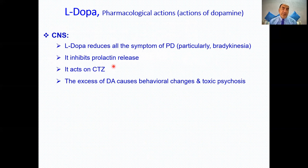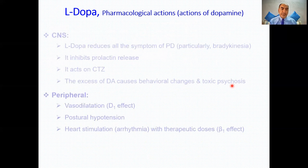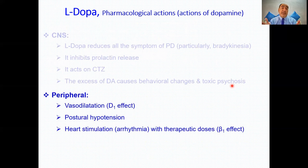Levodopa also inhibits prolactin release, and it acts on the chemoreceptor trigger zone (CTZ), so it can cause nausea and vomiting. Excess dopamine causes behavioral changes and toxic psychosis — schizophrenia is essentially opposite to Parkinsonism in terms of dopamine levels: more dopamine causes psychosis, less dopamine causes Parkinsonism. Cardiovascularly, because D1 receptors cause vasodilation, it can cause postural hypotension; through Beta-1, it can stimulate the heart and increase heart rate, causing arrhythmia — and these are effects within the therapeutic dose.